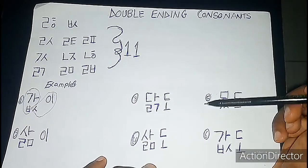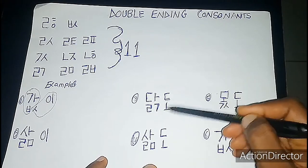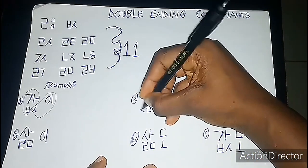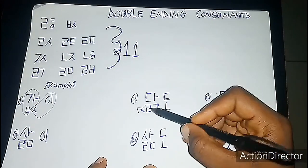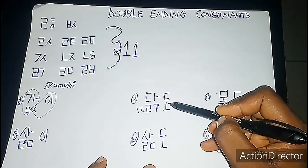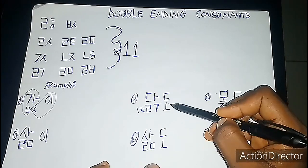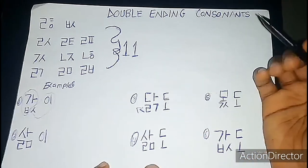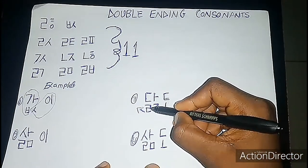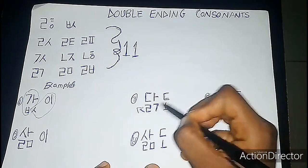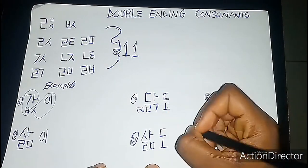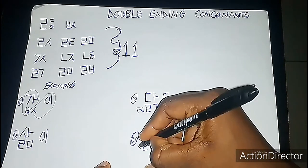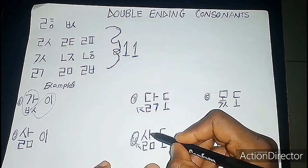Now, another situation is when both consonants have phonetic value. In that case, you throw the first ending consonant away. So this would be pronounced 'tak-to' — takto. And another example: 'sam-do' — samdo. You are throwing the first ending consonant out.